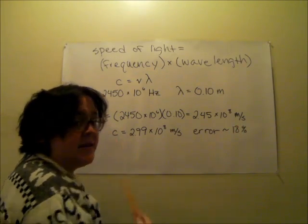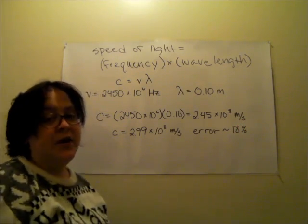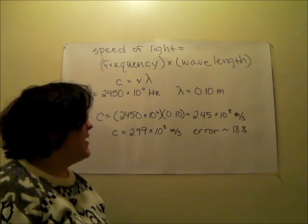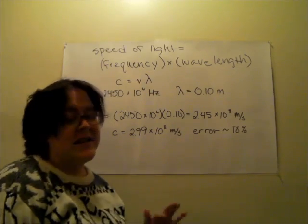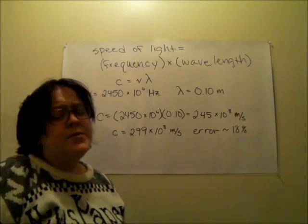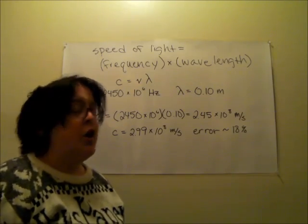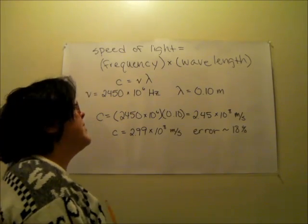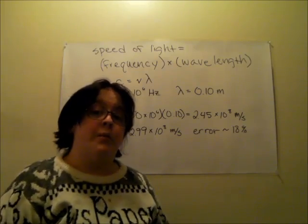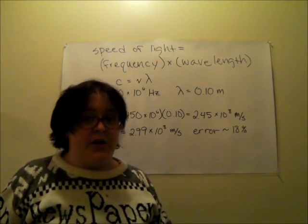So the actual accepted value for the speed of light is 2.99 times 10 to the eighth meters per second, which gives us an error of around 18%. 18% seems like a pretty large error, but we did just try to calculate the speed of light using mini marshmallows and my microwave. So I think we're doing pretty good.